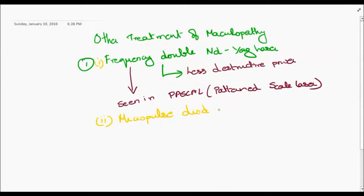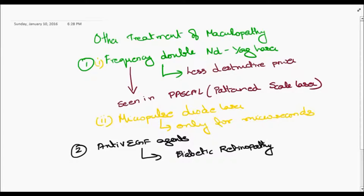Micropulse diode laser, which has effect only for microseconds, is another option. Anti-VEGF agents are also used, according to the Diabetic Retinopathy Research Network.